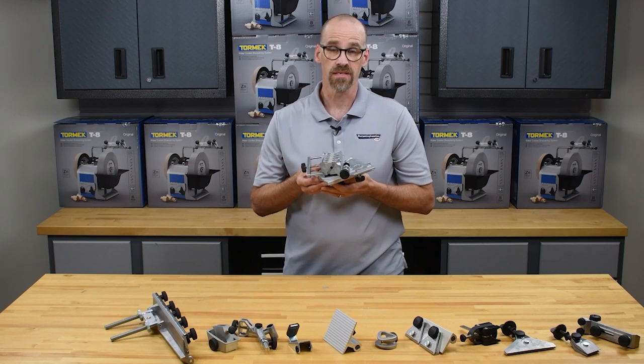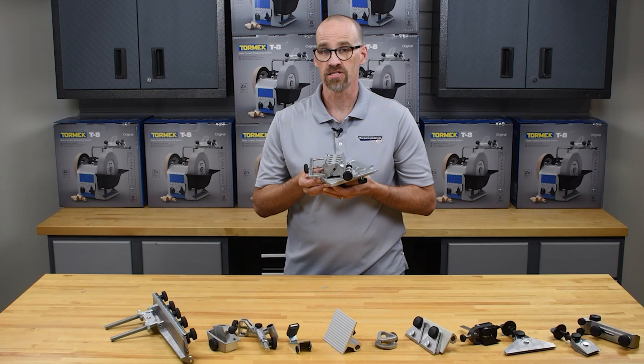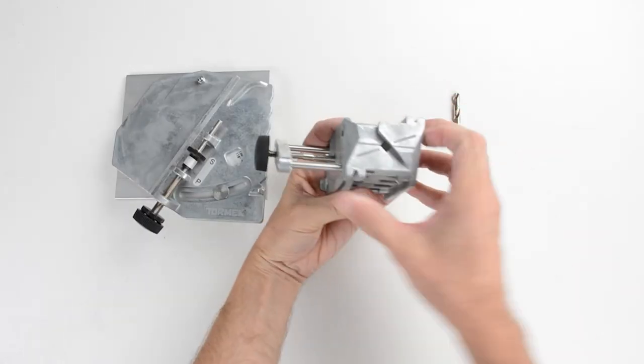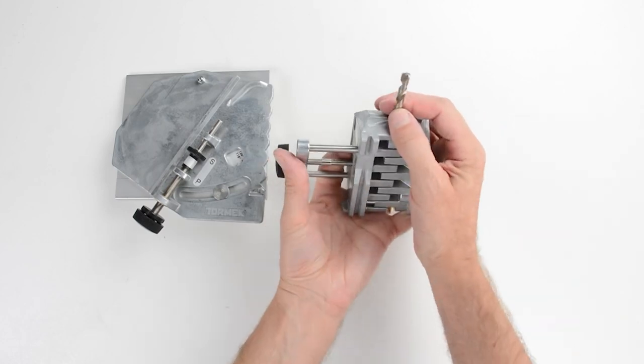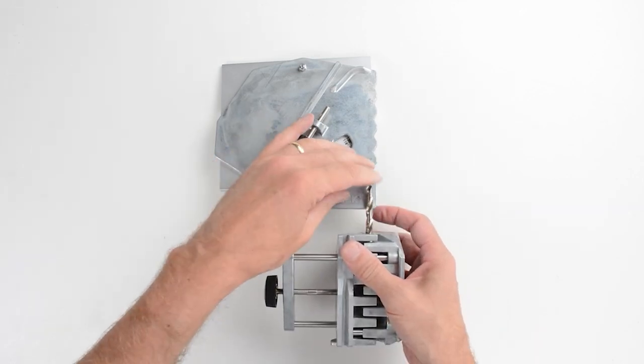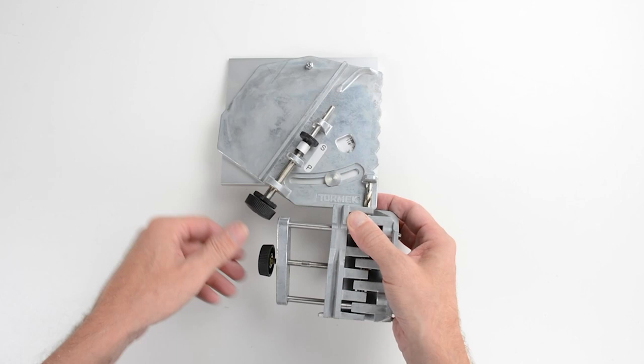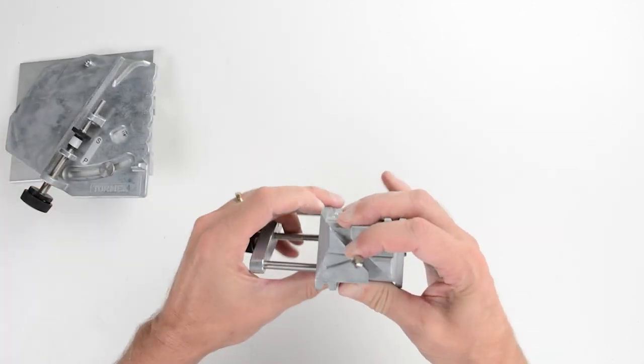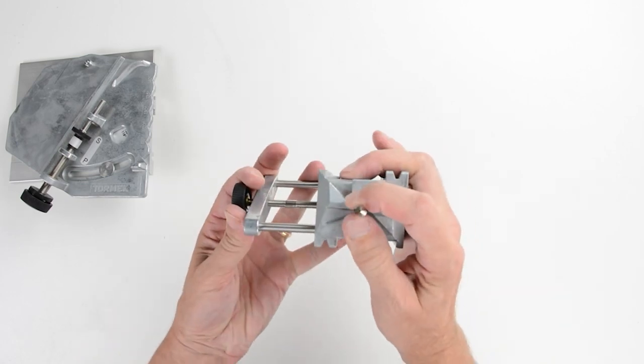The DBS22 drill bit attachment will handle drill bits from 1/8 to 7/8 inch diameter. Mount the drill bit with the protrusion stop on the guide. Ensure that the cutting edges are parallel to the horizontal lines on the drill holder.